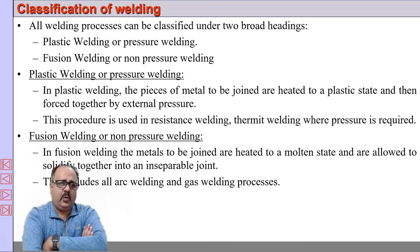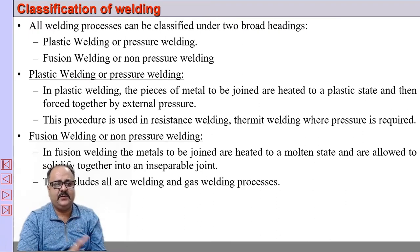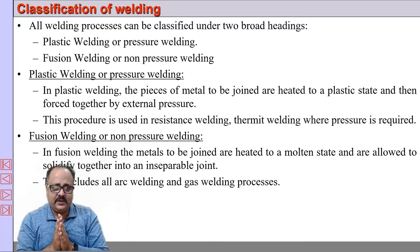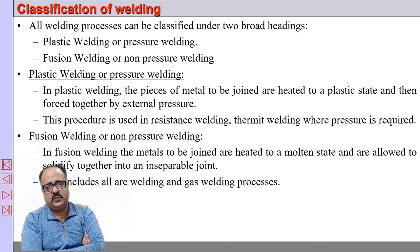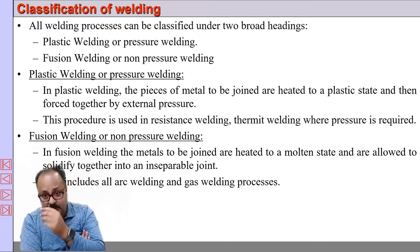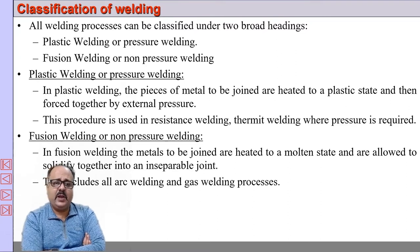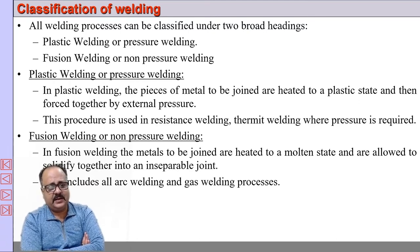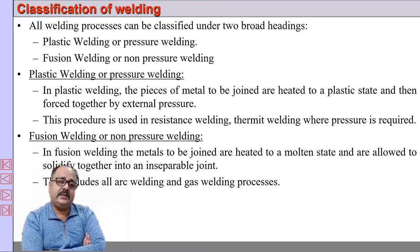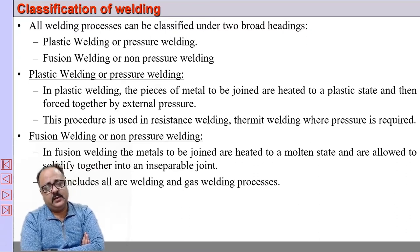When you classify all welding processes, you can classify them into two categories: pressure welding and non-pressure welding. In pressure welding (also called plastic welding), we do not heat the base metal to melting temperature; we heat it to a plastic or mushy state and apply pressure to complete the joint. Examples include resistance welding and thermite welding. Thermite welding may or may not be a pressure welding process, but resistance welding is definitely a pressure welding process.